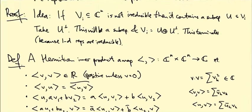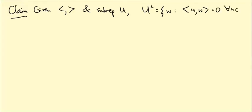That's what I want to prove. So, claim: Given an invariant Hermitian inner product and a sub-representation U, U orthogonal complement, which is defined to be the set of vectors W such that <U,W> equals 0 for all U in U, this is a sub-representation. That's what we need to prove, because then we can split our representation as U plus its orthogonal complement whenever we can find a sub-representation U.